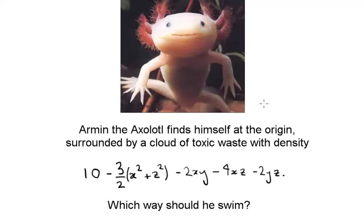Armin the axolotl finds himself at the origin surrounded by a cloud of toxic waste with density given by this formula: 10 minus 3 halves (x squared plus z squared) minus 2xy minus 4xz minus 2yz. And we are asked which way should he swim?